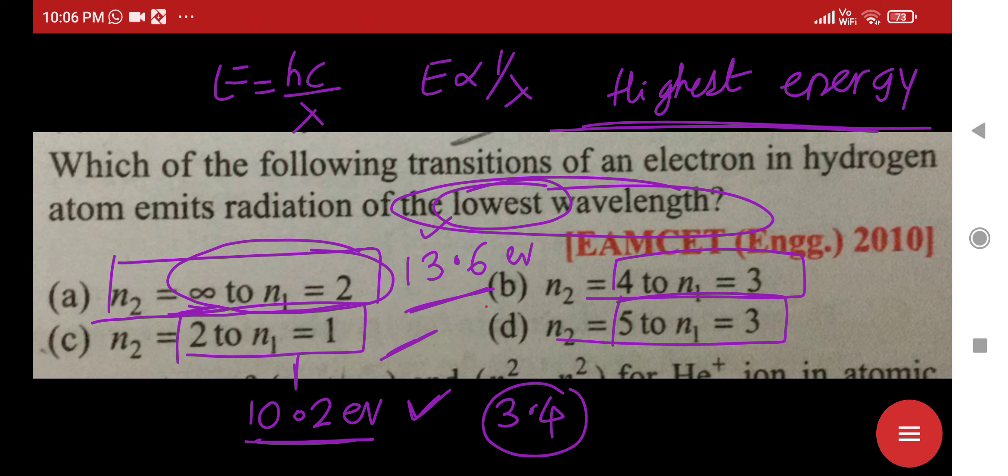But 2 to 1 is only having greater energy. Greater energy means lowest wavelength. Don't confuse. Infinity to 1 is always great, but don't think that 2 to 1 will be lesser than infinity to 2. Infinity to 2 energy is just 3.4, whereas 2 to 1 energy is going to be 10.2. So for this question the right answer is 2 to 1.